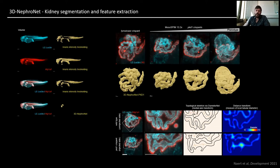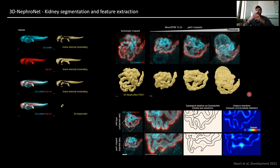This now allows more pronounced feature extraction. For instance, we used topological skeletons and medial axis transform to generate a heat map showing the measure of how much the kidney tubule is dilated at each location in the kidney.